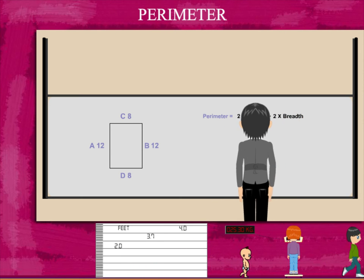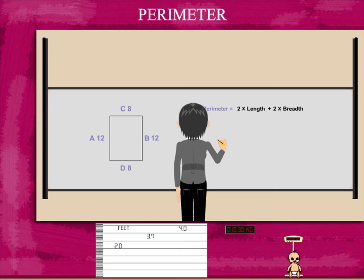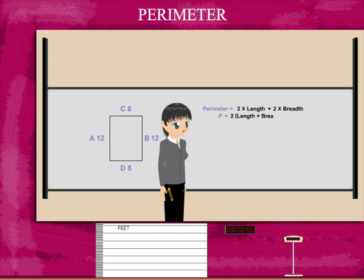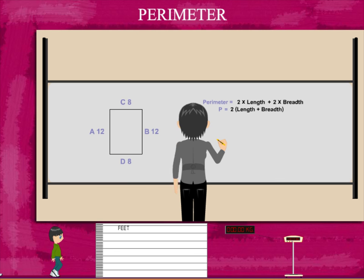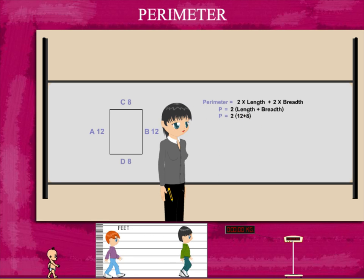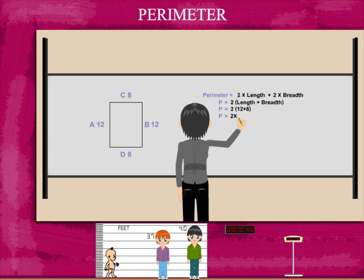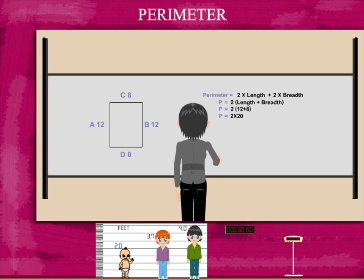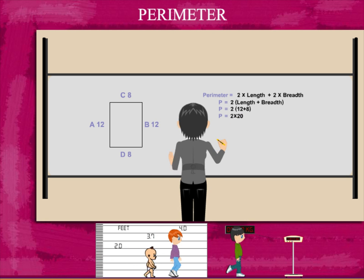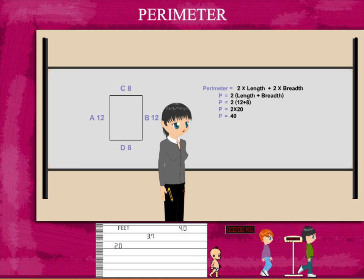So perimeter is 2 into length plus breadth. In this case it is 2 into 12 plus 8, or 2 into 20, that makes it 40. Easy.